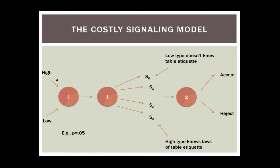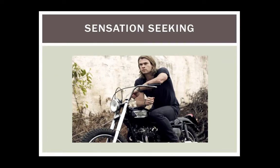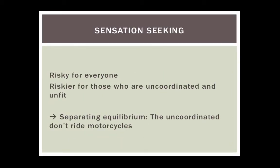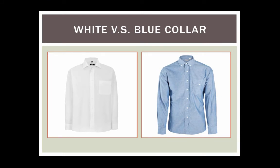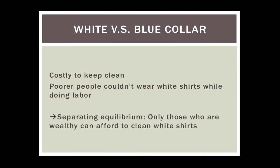High-types know the laws of table etiquette and send the costly signal. Player 2 can then decide to accept or reject. What about other modern phenomena? Riding a motorcycle is risky for everyone, but it is even riskier for those who are uncoordinated. High-types show their coordination by riding motorcycles. What about the distinction between white-collar and blue-collar jobs? White shirts were costly to keep clean — poor people couldn't wear white shirts while doing labor. Only those who were wealthy could afford to clean white shirts. As a result, white shirts are a costly signal.